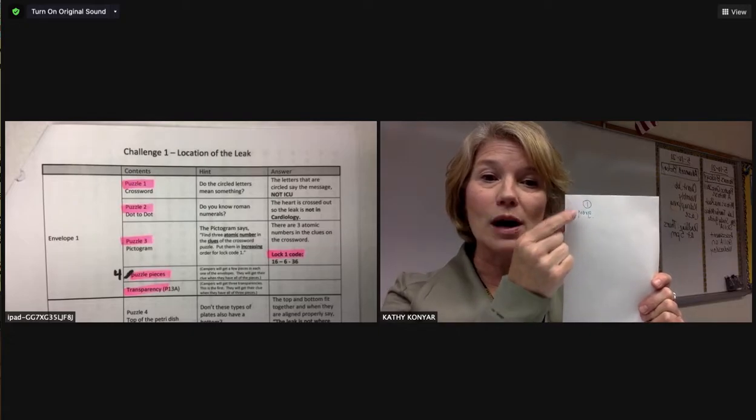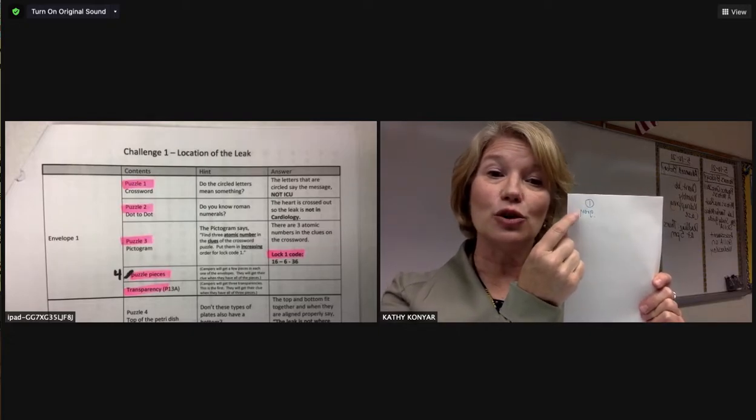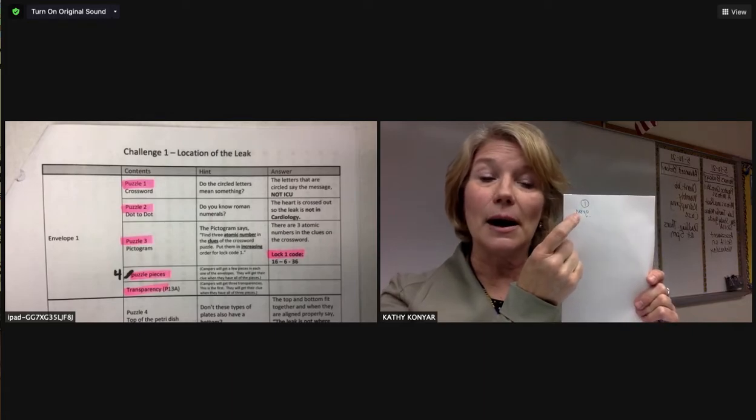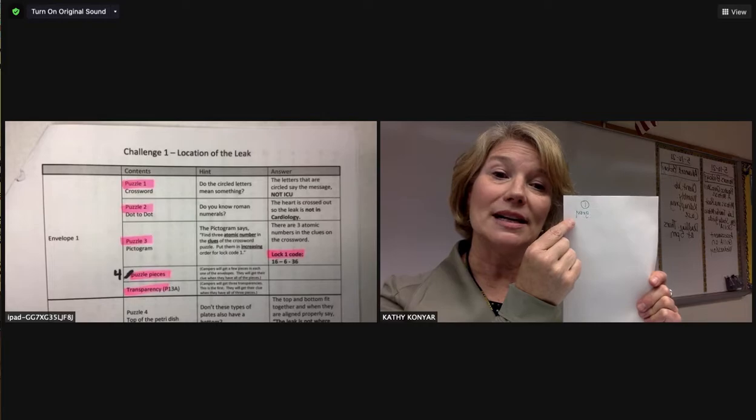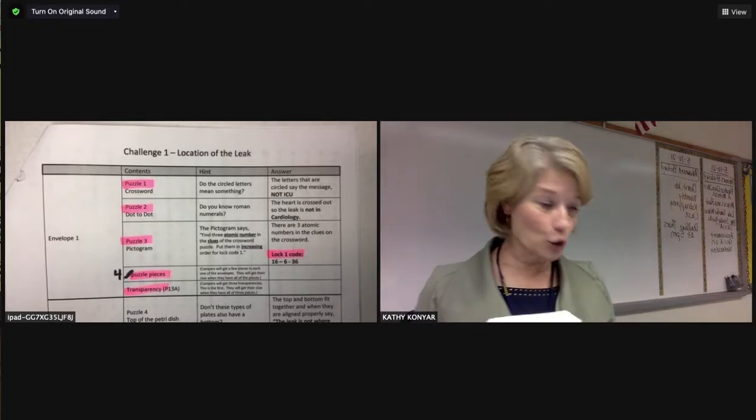So this is envelope one. This is for the gray group. This gray refers to the puzzle, the color on the puzzle that we assembled earlier. Okay, so we're going to set up envelope one.